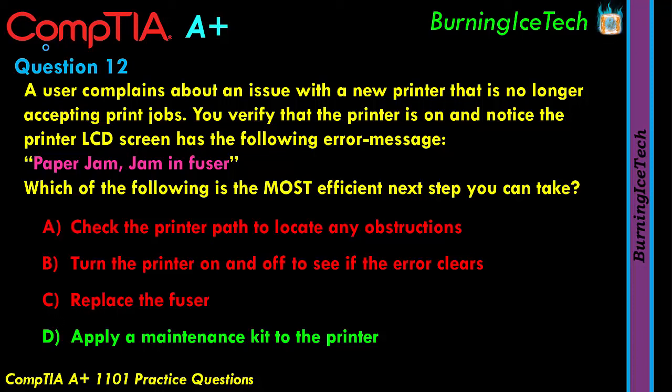The maintenance kit includes new rollers — the rubber wheels that move paper from point A to point B inside the printer. Over time, like car tires, these rollers get smoother and smoother with wear, and you need to replace them. When they start slipping, you get paper jams — hence the error we've gotten here. So the answer is D: apply a maintenance kit to the printer.